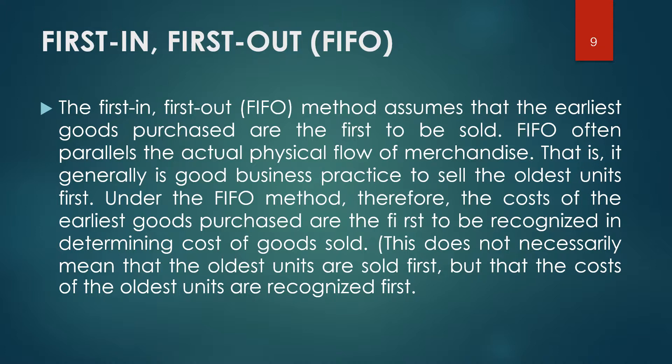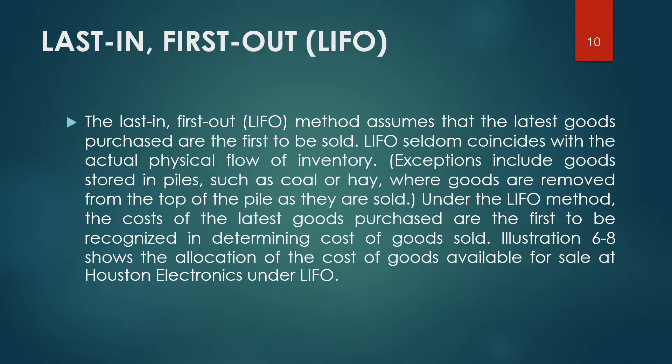This does not necessarily mean the oldest units are sold first, but that the costs of the oldest units are recognized first. The LIFO method assumes that the latest goods purchased are the first to be sold. LIFO seldom coincides with the actual physical flow of inventory, with exceptions such as goods stored in piles like coal or hay. Under LIFO, the costs of the latest goods purchased are the first to be recognized in determining cost of goods sold.